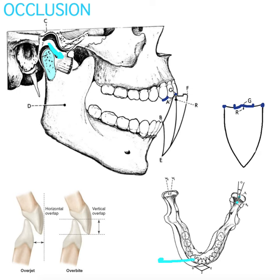We can draw a line through the two points of condylar position before and after movement on the non-working side. This line versus a sagittal median line — perpendicular to the coronal plane of the body — forms the Bennett angle.